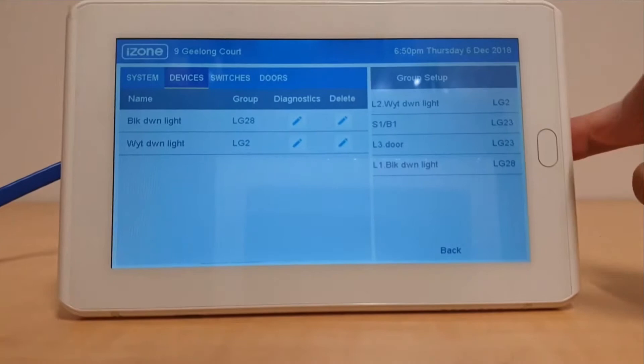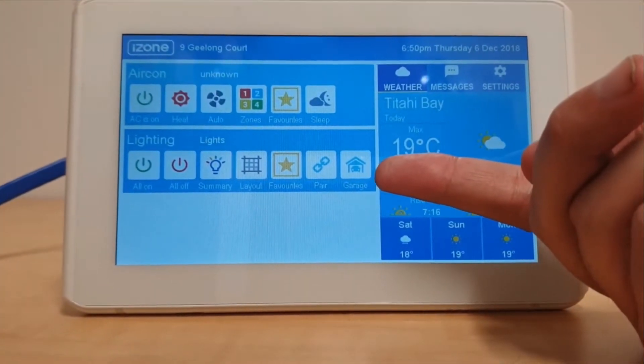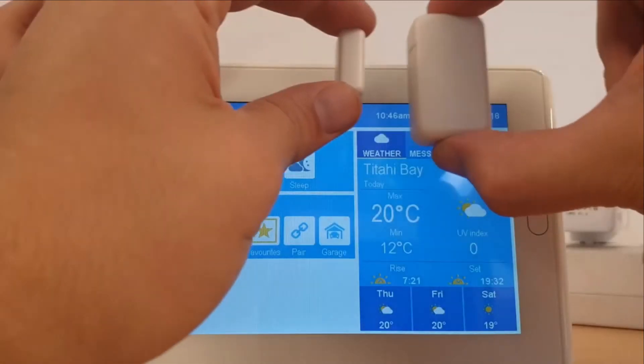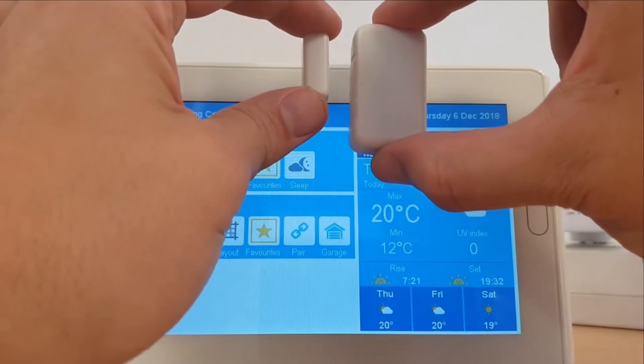Now if you press the home button, you'll see that the garage door icon is now appearing on the lighting menu. For testing, you can move the reed switch in and out and you should see the garage door icon opening and closing accordingly.